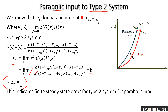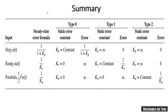Summary: For type 0 system — step gives finite error A/(1+K), ramp and parabolic give infinite error. For type 1 system — step gives zero error, ramp gives finite error A/K, parabolic gives infinite error. For type 2 system — step and ramp give zero error, parabolic gives finite error A/K. These are the key points to remember regarding steady state error and system type.